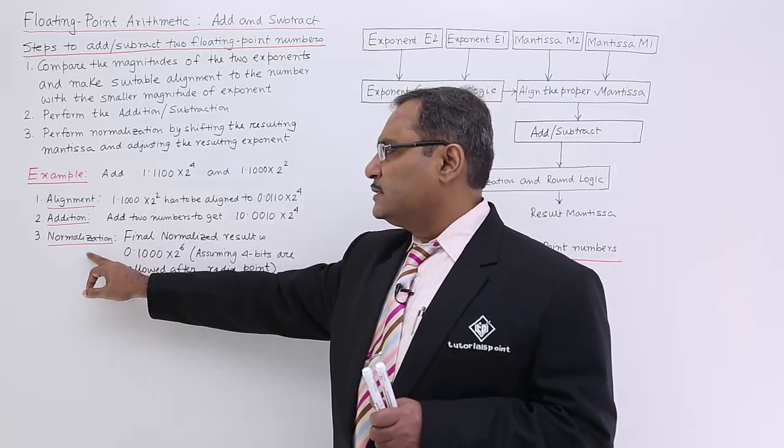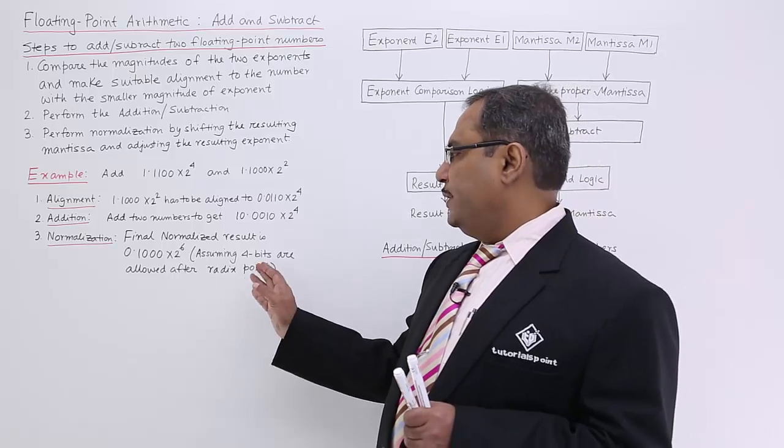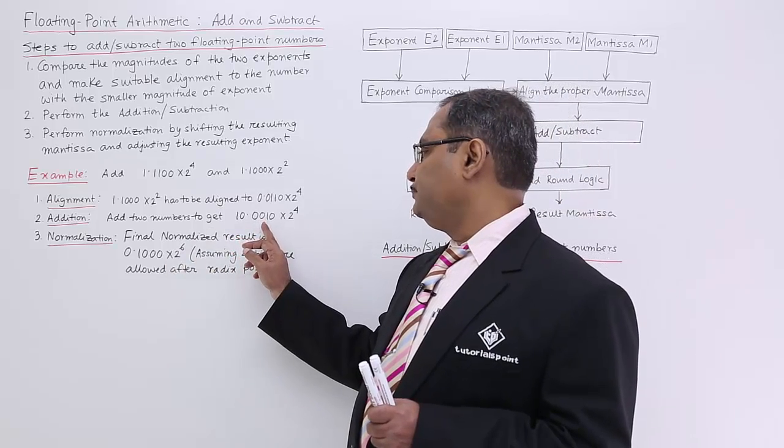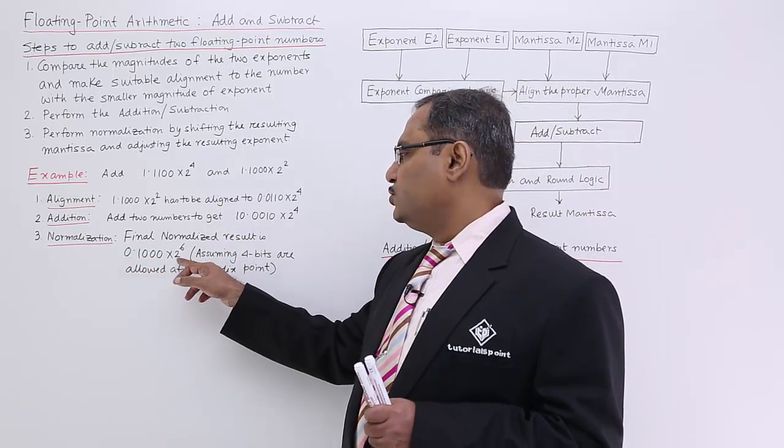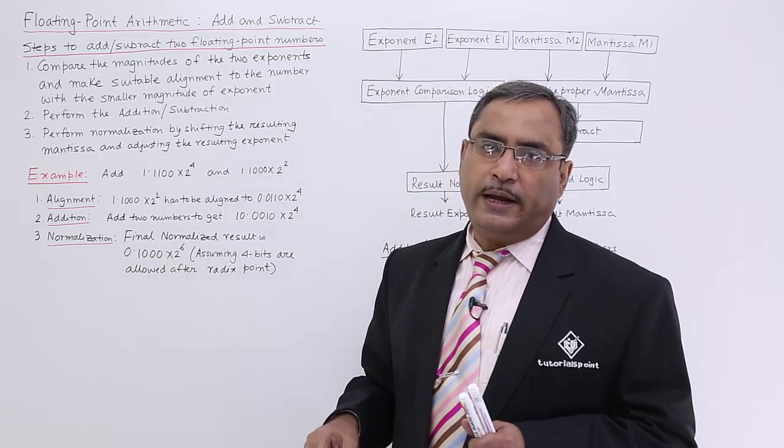And then 2 to the power of 4 will be there. And then the last step will be known as the normalization. Again this very number has to be normalized, that it will come in this particular format.